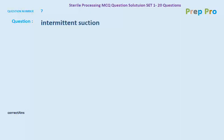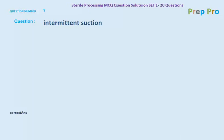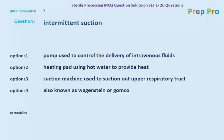Question number seven: intermittent suction. The options are: a pump used to control delivery of intravenous fluids; a heating pad using hot water to provide heat; a suction machine used to suction out the upper respiratory tract; and also known as Wangensteen or Gomco. The correct answer is also known as Wangensteen or Gomco.